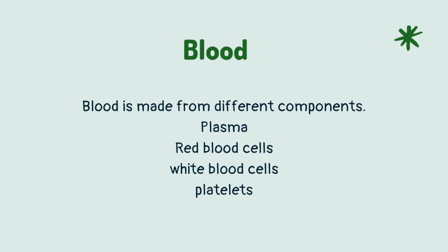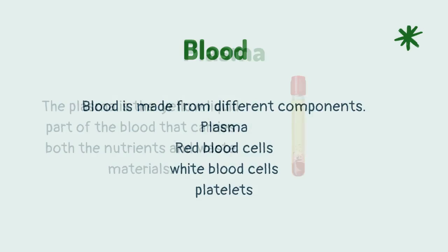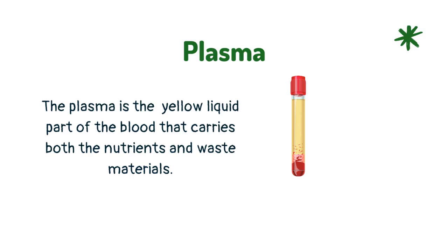Blood is made from different components: plasma, red blood cells, white blood cells, and platelets. The plasma is the yellow liquid part of the blood that carries both the nutrients and waste materials.